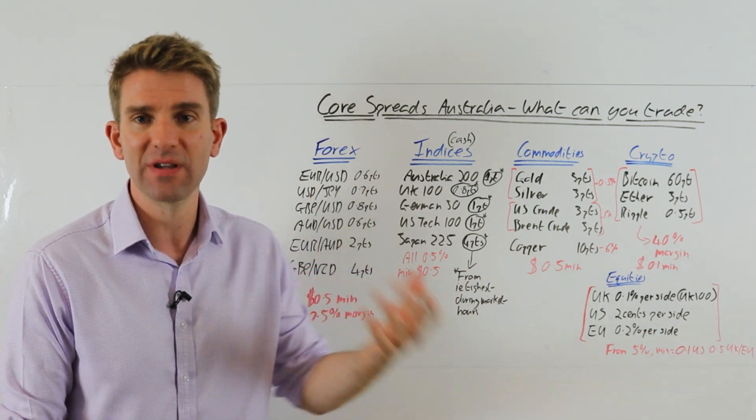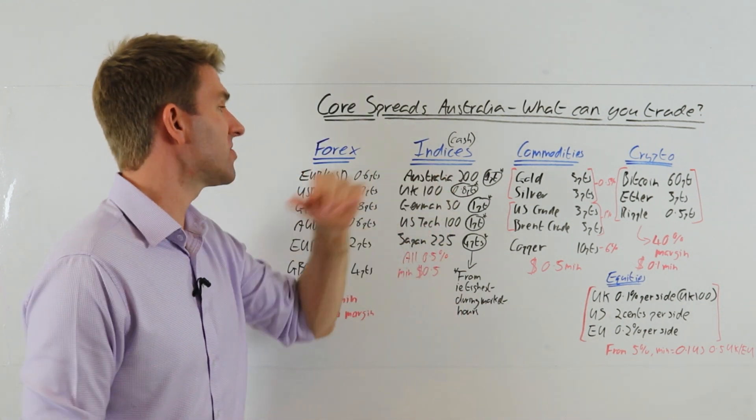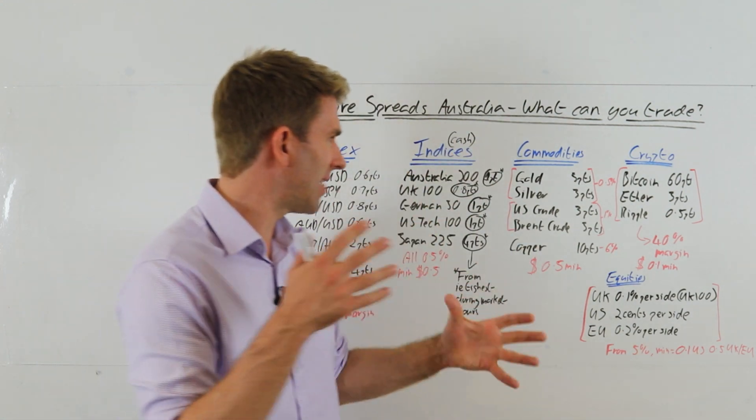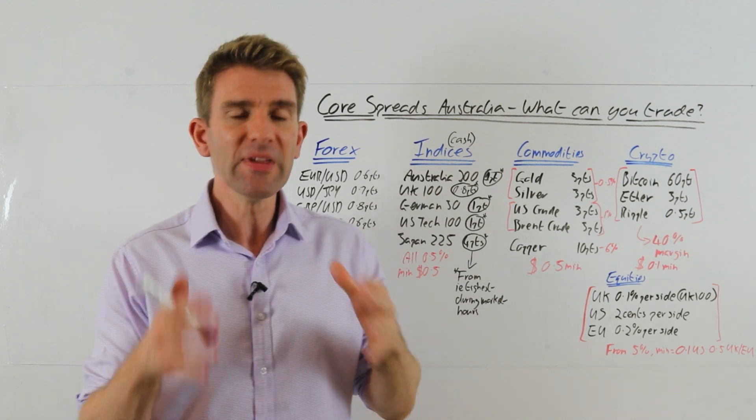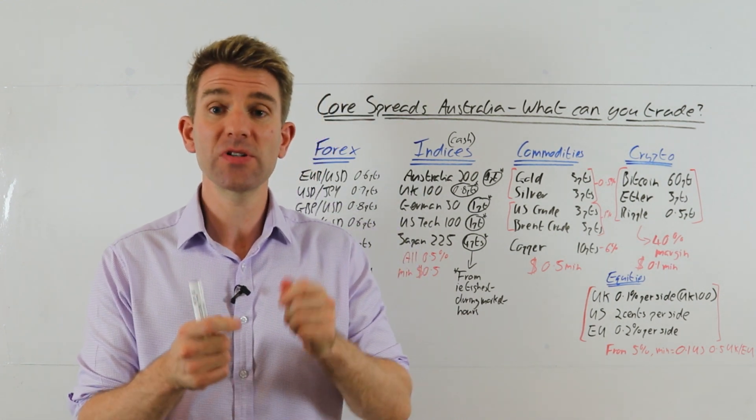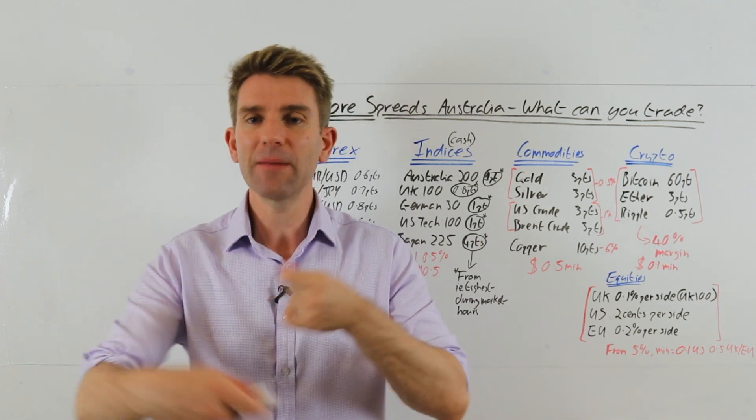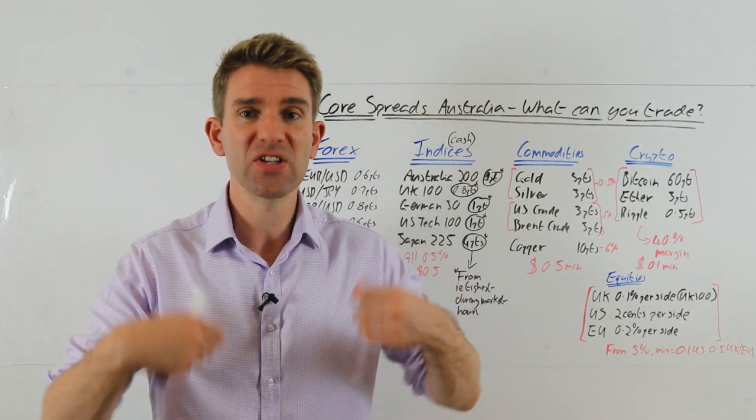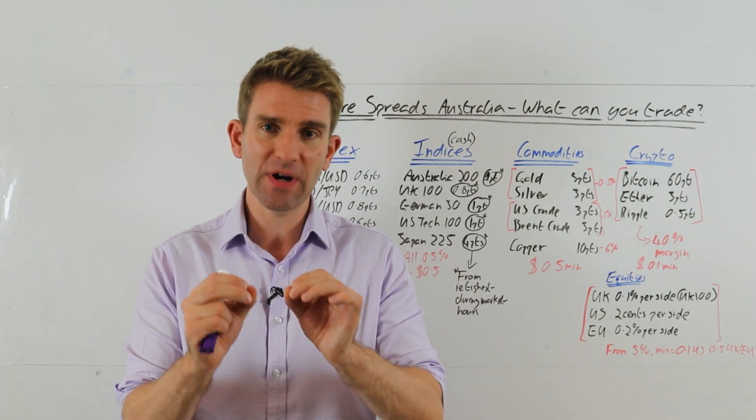They've got heaps of forex pairs. I've only just included a few here to give you an idea and a benchmark. Indices: this is for the cash indices, not for futures. The cash is slightly different. With indices it's worth pointing out that for most of them during the market hours, i.e. when that underlying market is open, regular trading hours when the shares are actually trading, that's when the spreads are the most tight.